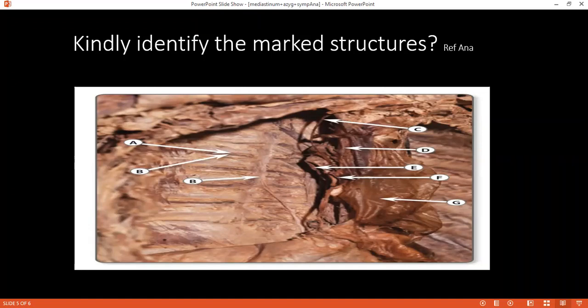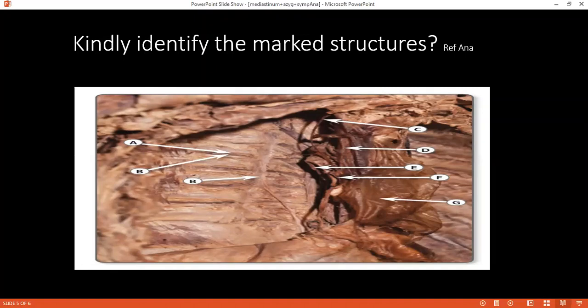C looks like the cardiac plexus — I'm not sure. D — vagus nerve. What is D? Pericardium is reflected. Yes, the pericardium has been reflected like this, so you're looking at the underside. This is your homework for tomorrow.